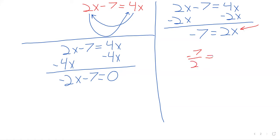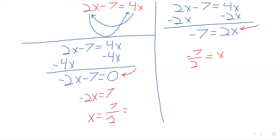Sometimes one method might be better in the sense that it involves fewer steps. On the right side, we just need to divide by 2 — one step and we're done. Over here, we need to first add 7, then do division. The answers are written a little differently, but they're the same number. Whether the negative sign is in the top or the bottom doesn't matter. So probably what we did on the right was easier, but ultimately we ended up in the same place.